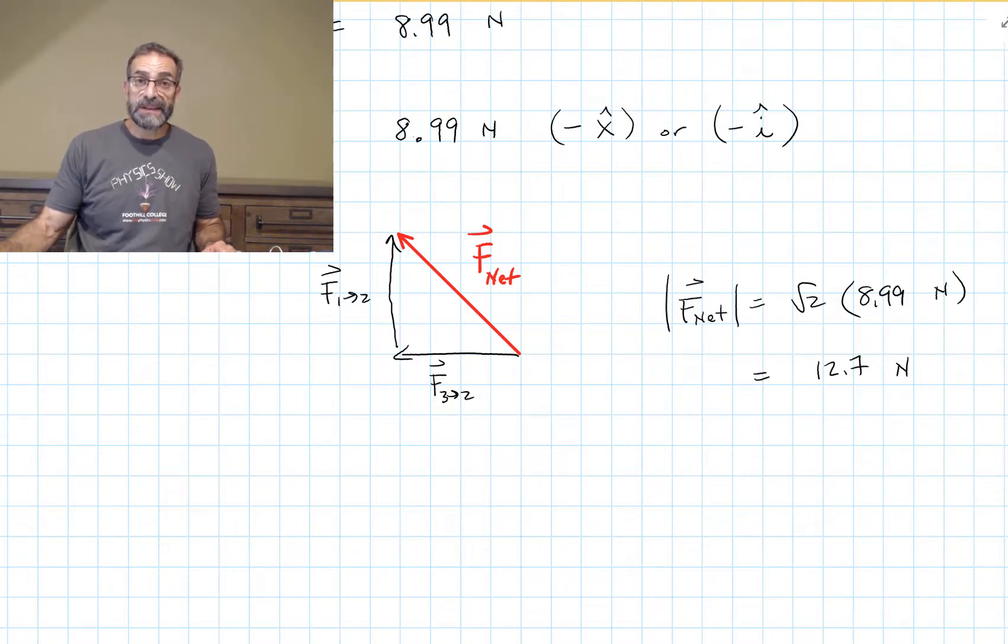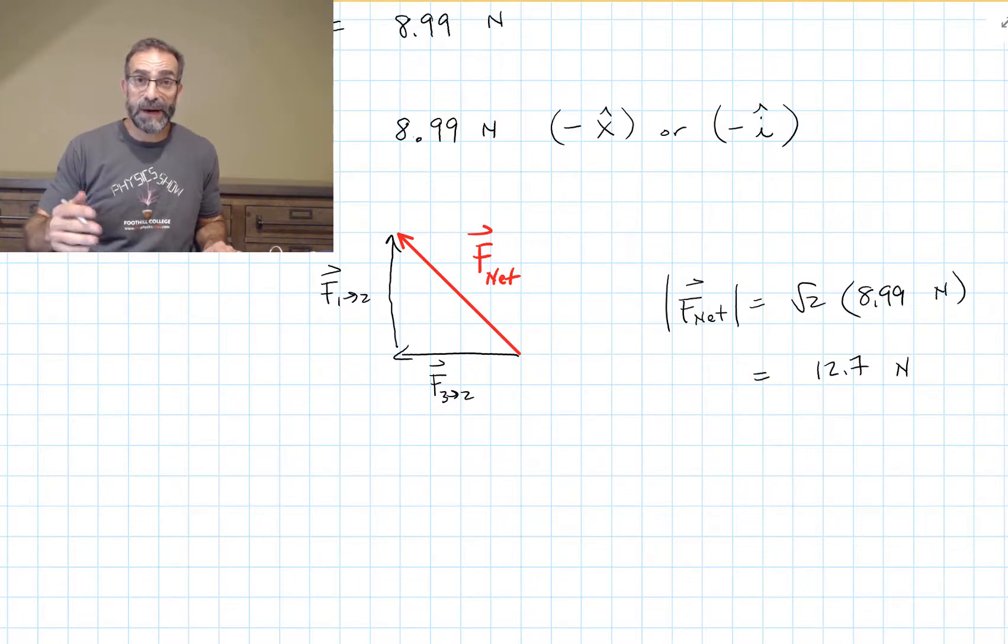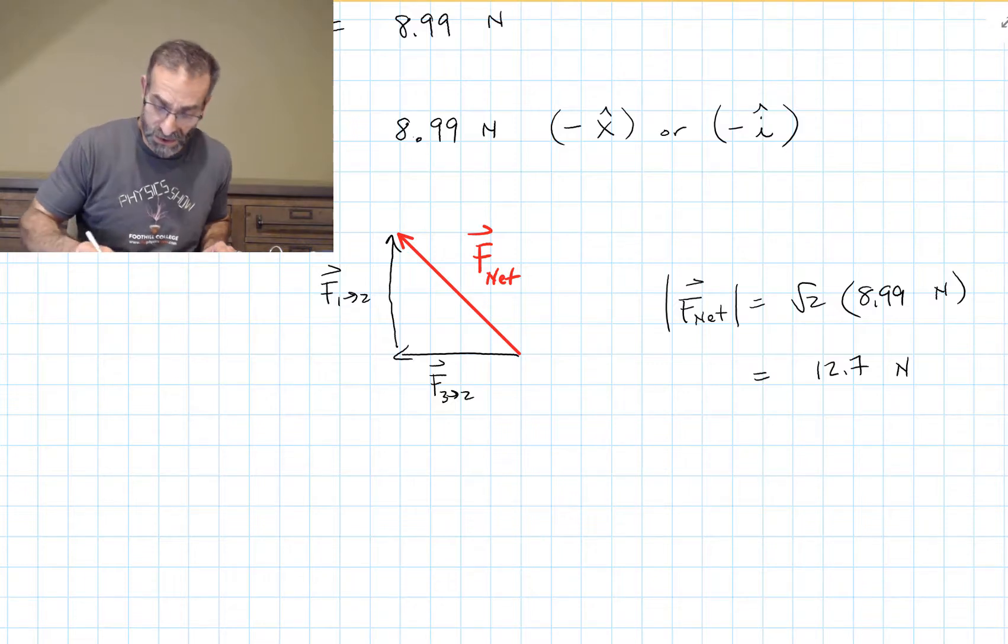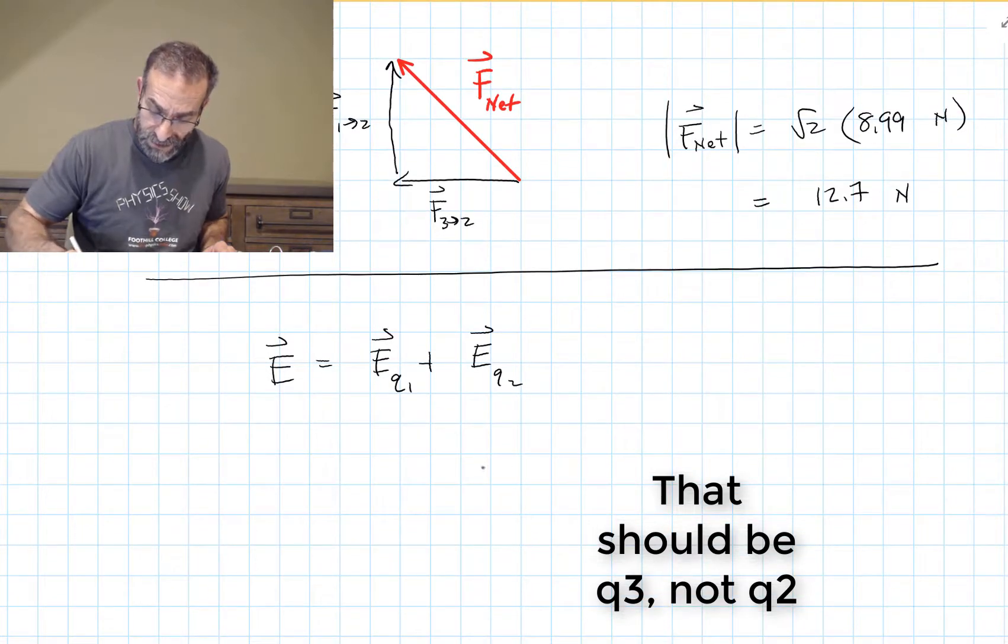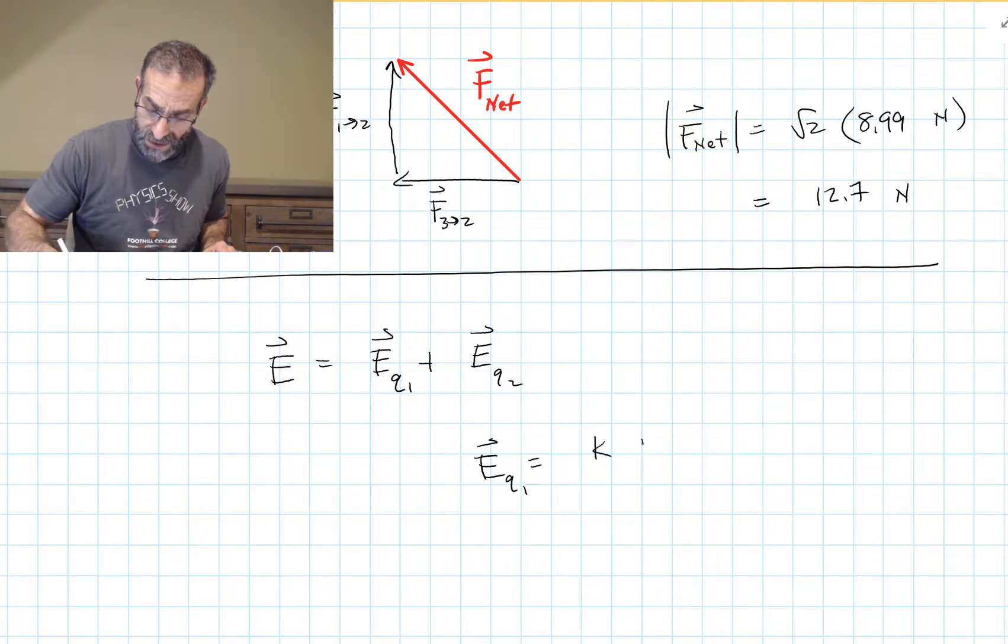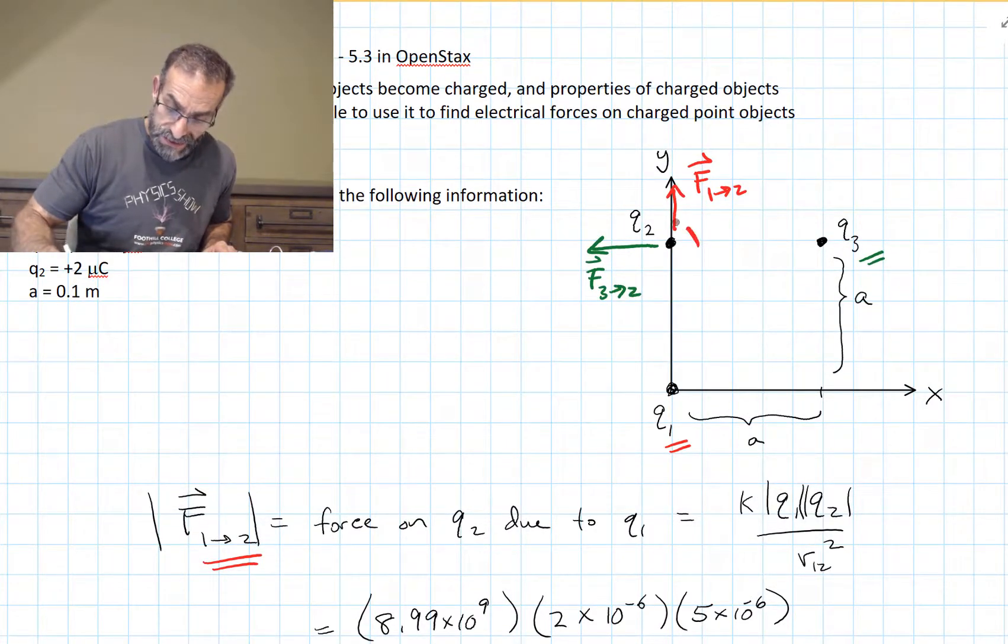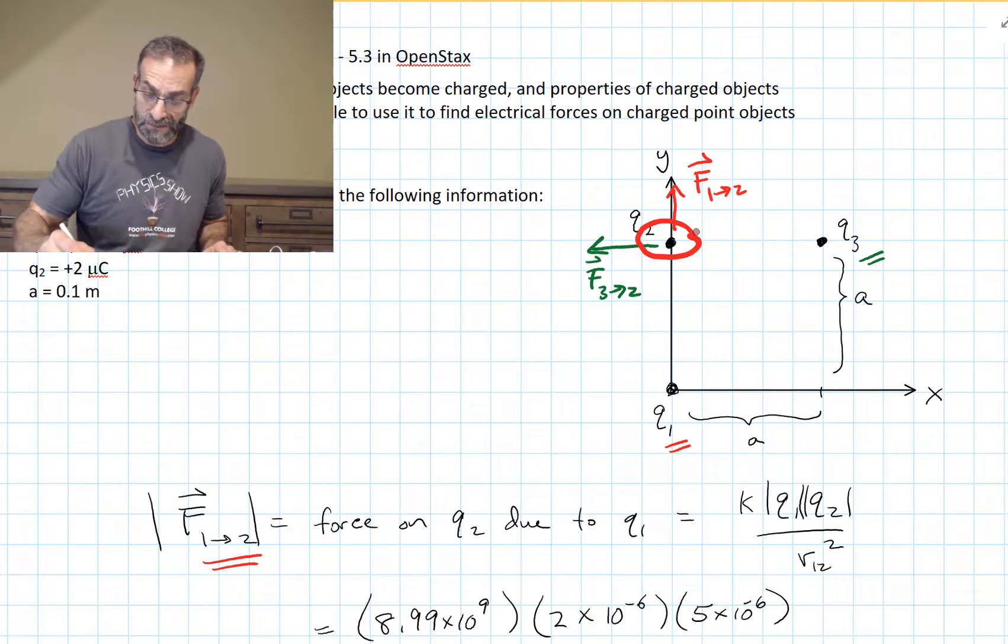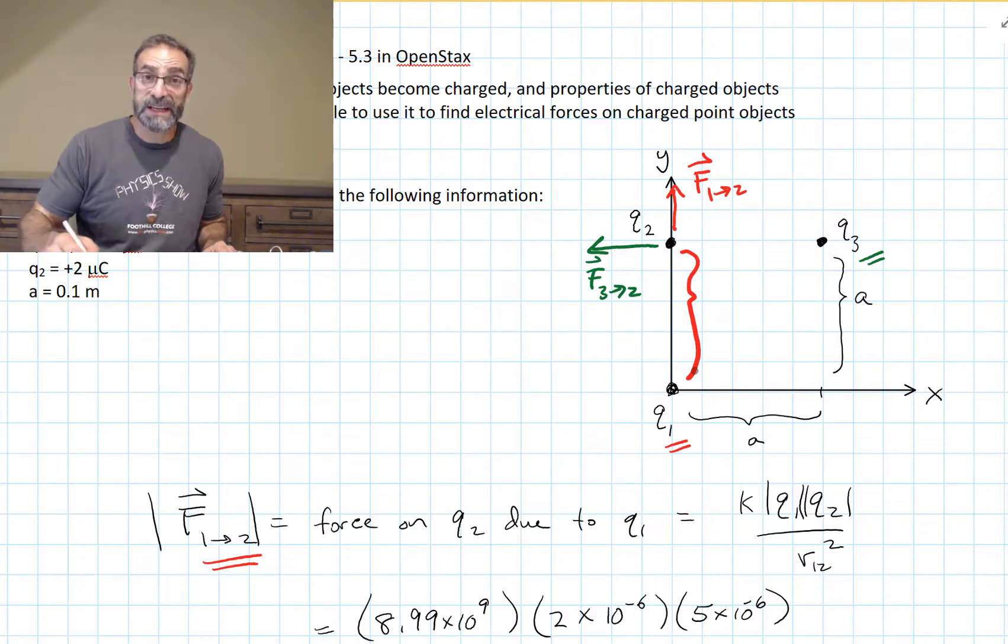We could have also found the net electric field at the location of Q2, and once we had that, we could have multiplied that by the charge Q2. So we could have said the electric field is equal to the electric field due to Q1 plus the electric field due to Q3. The electric field due to Q1 is KQ1 over R squared. And we want to know the electric field at this location where Q2 is due to Q1. So the R is the distance between Q1 and Q2. In this case, it's just A.